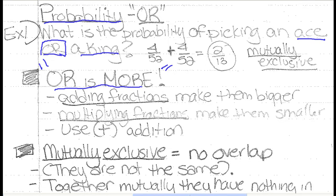So I start with the probability of an ace, which is 4 out of 52, because there's 4 aces and 52 cards in a deck. Same for kings, 4 and 52. So the question was, what operation should we use in the middle? Remember, or is more.